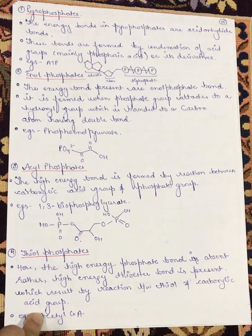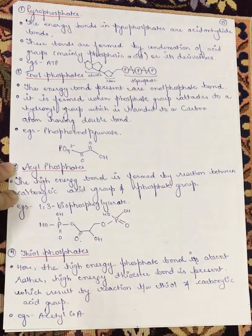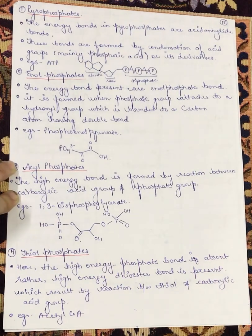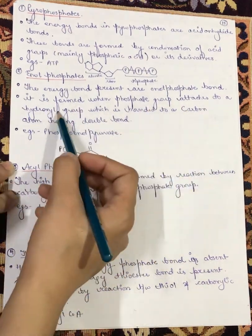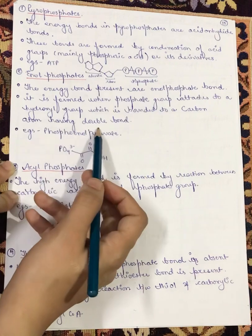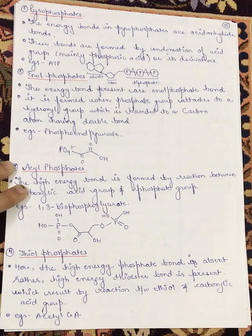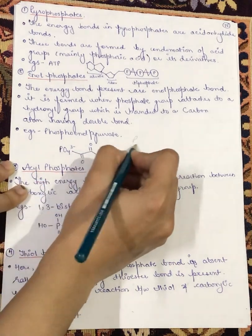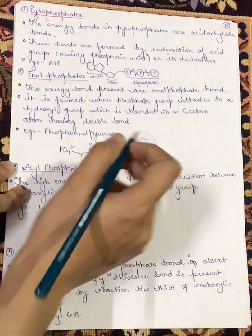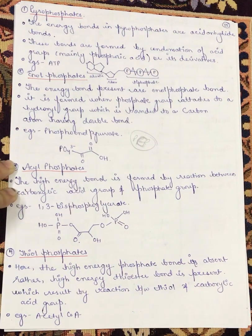Next is enol phosphates. The energy bond present is the enol phosphate bond. It is formed when a phosphate group is attached to a hydroxyl group that is bonded to a carbon atom having a double bond. An example is phosphoenolpyruvate, also written as PEP. This is a high-energy compound you will encounter in the metabolism.